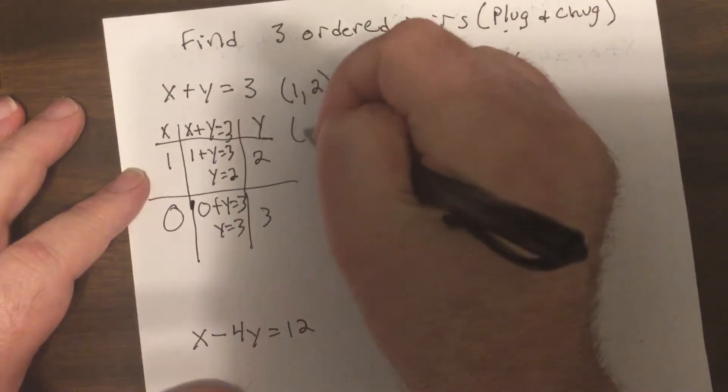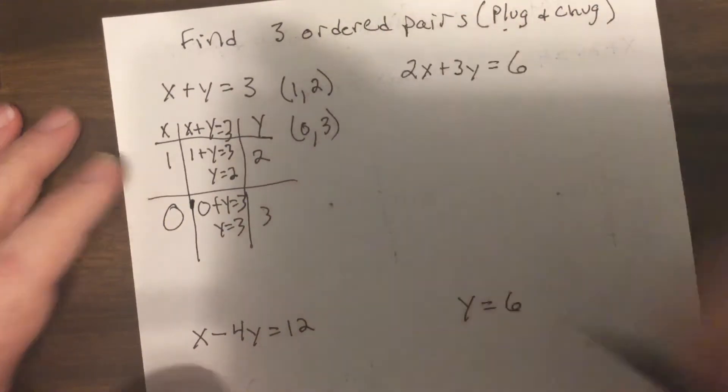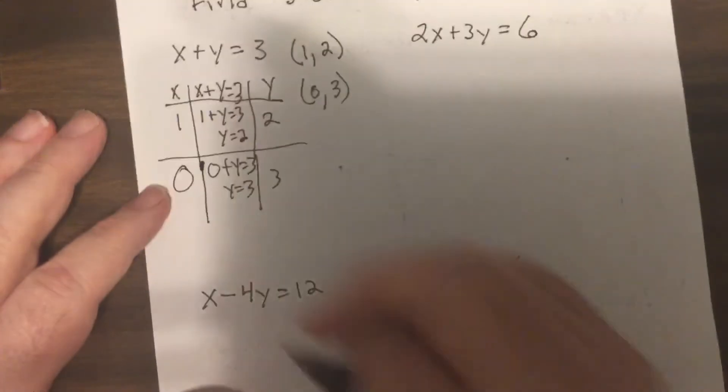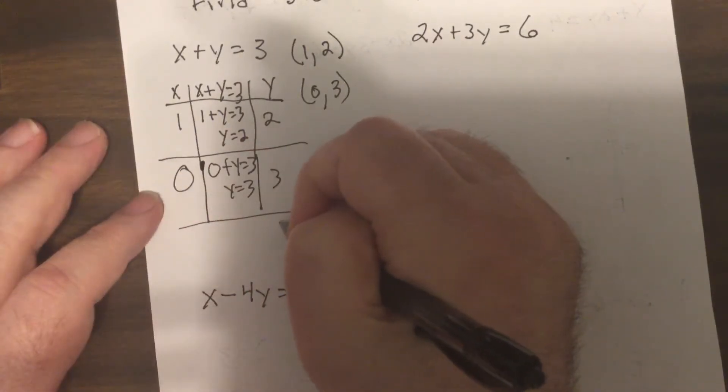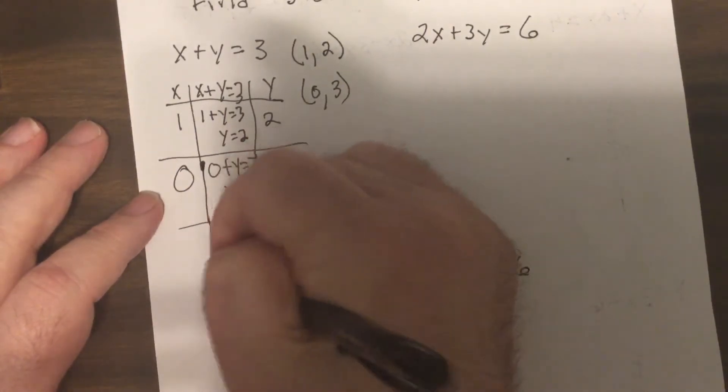Put zero in for X. Zero plus Y equals three, so Y equals three. That's another ordered pair. Now there's an infinite number of ordered pairs. I only want you to find three.